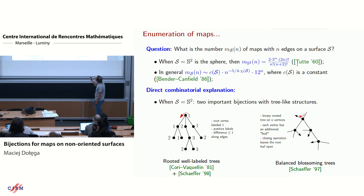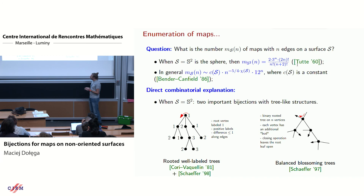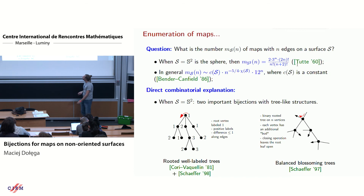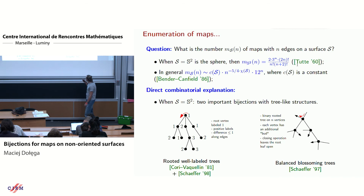If you look at this formula, you can see a Catalan number times 2 times 3 to the n, divided by n plus 2. You might guess it should be related to counting rooted trees, given by the Catalan number, with some additional information. This path was taken by Cori and Vaulin in 1981, who proved this formula directly by giving a bijection between maps and labeled trees. In the 90s, Gilles Schaeffer was working on the Cori-Vaulin bijection, rephrased it differently, and also found another bijection with a different tree-like structure — called balanced blossoming trees.